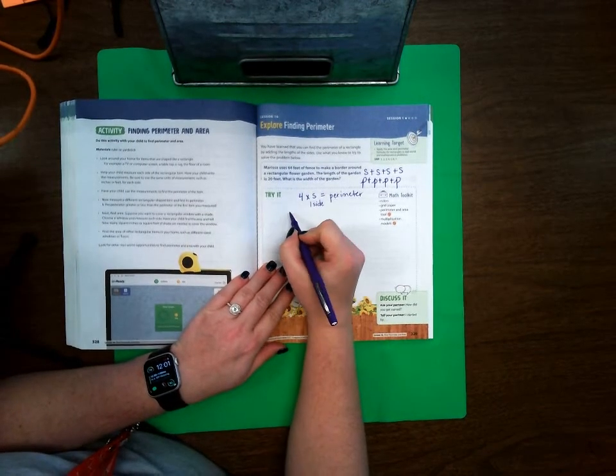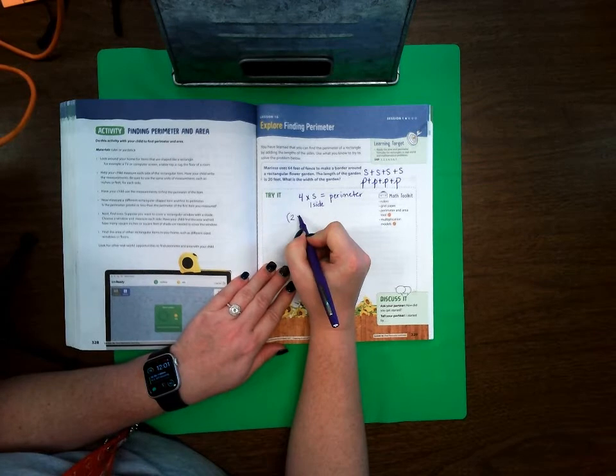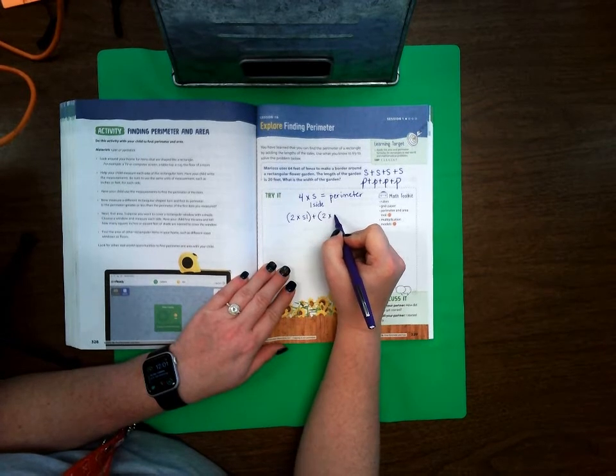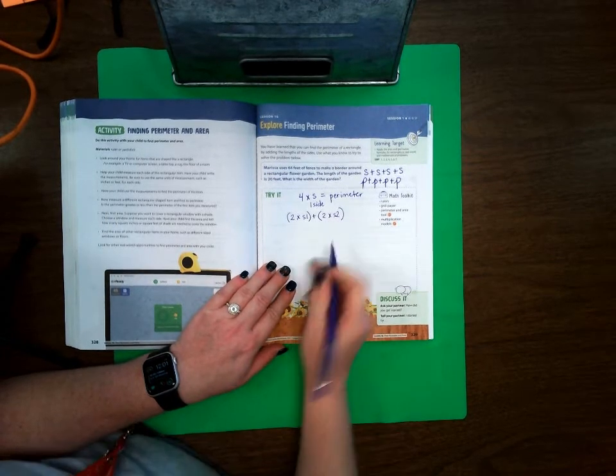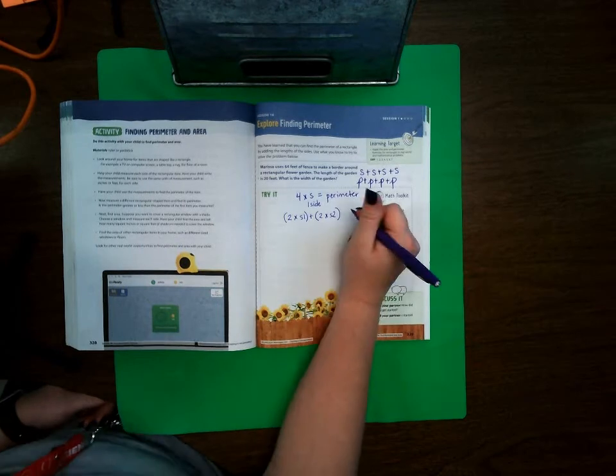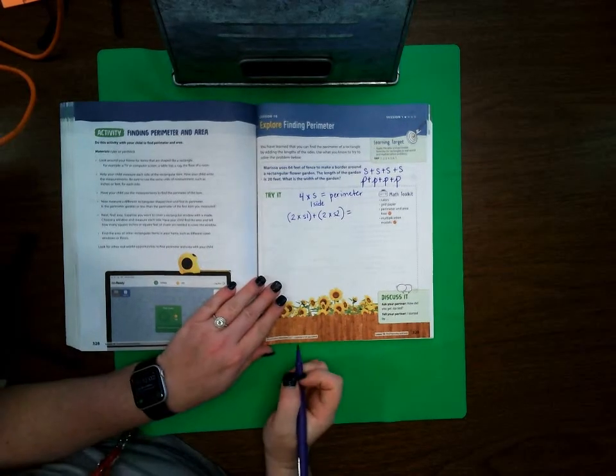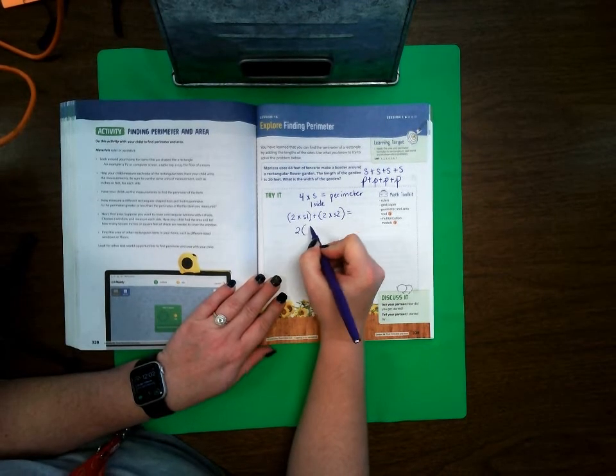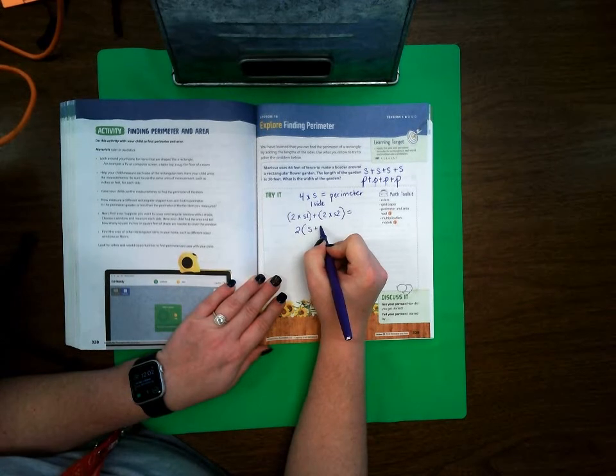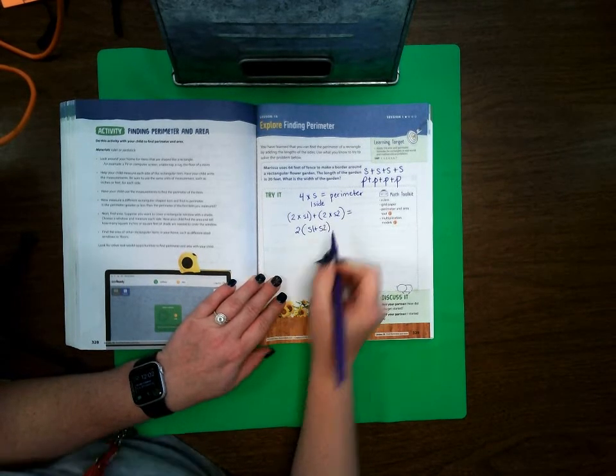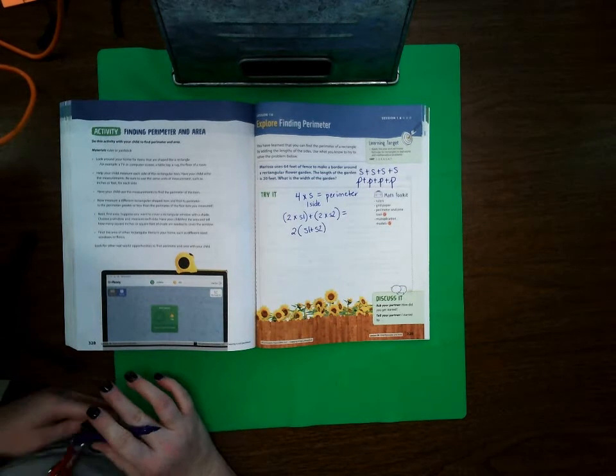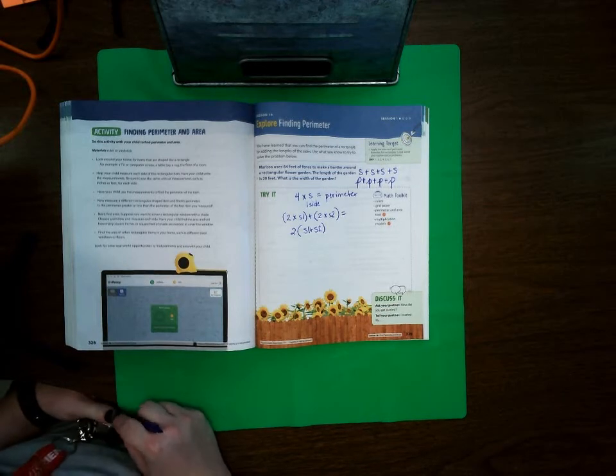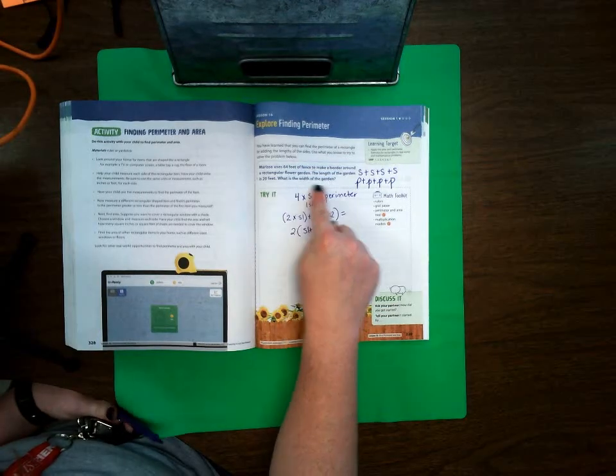If it's another shape like a rectangle, then you would do two times the first side plus two times the second side. So side one and side two, and that would equal your perimeter. Or one last formula would be two times parentheses side plus side, so side one plus side two. That's three different formulas for how to solve perimeter that we'll be using in fourth grade. But let's go ahead and take a look at our problem for today.